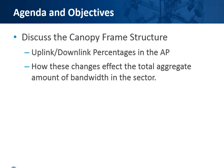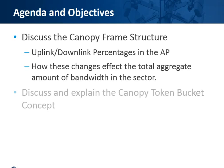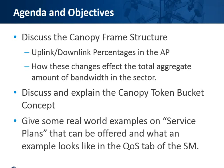With the objectives, the first thing we'll look at is the Canopy frame structure itself. It's very important that we have this basic concept down, as it does dictate — depending on the application — how much bandwidth is going on the uplink or downlink, and these changes will have a dramatic effect on the total throughput for the sector in an aggregate fashion. Secondly, we'll look at the Canopy token bucket concept and how it works. Thirdly, we'll give some real-world examples on service plans and what they look like in the QoS tab of the SM subscriber module.